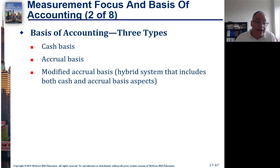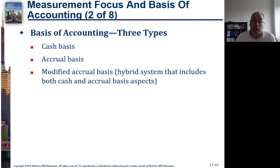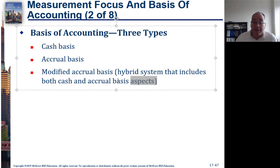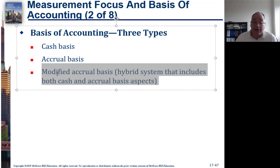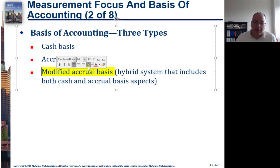We have basically three possible ways of dealing with these issues: cash basis and accrual basis, which you should already be familiar with. And then we have in governmental accounting what's called the modified accrual basis, which is kind of in between.